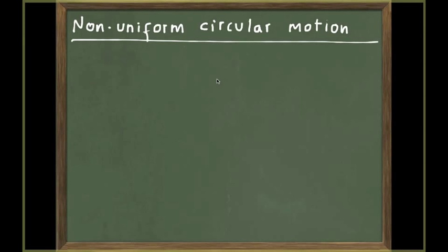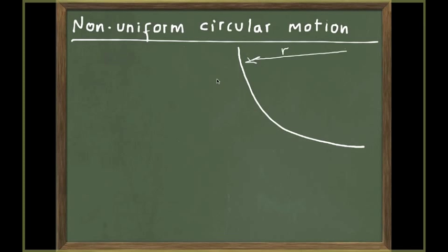Let's talk about non-uniform circular motion. As you remember, an object moving in uniform circular motion moves along a circular path, let's say where the radius is R, and it does so with a speed that changes with time.